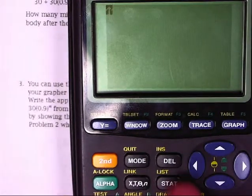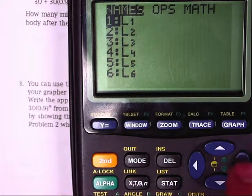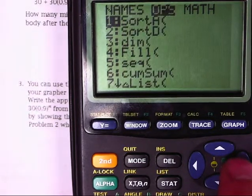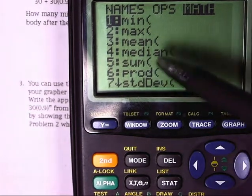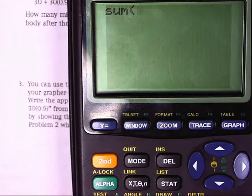If you hit Second, Stat, it brings you over here to Names, Operations, and Math. We're actually going to move over to Math first to look at number 5, which is the sum. So we go down to number 5, select that, and then we're going to do this. This is the sum of all parts that you list next.